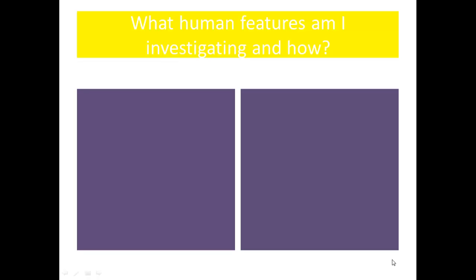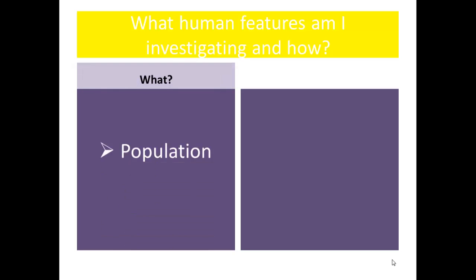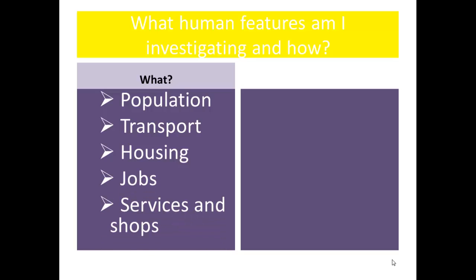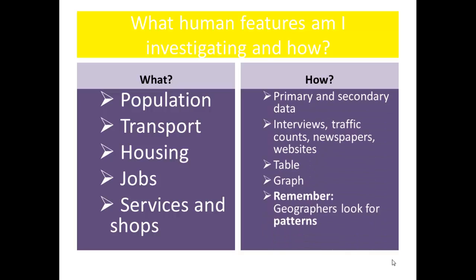To finish off — what human features are you going to investigate and how are you going to do it? These are the human features you've looked at that you're going to put into your project, along with ideas about how you could do it. You can use primary and secondary data involving interviews, traffic counts, newspapers, websites, etc. Put the results into a table, then turn the table into a graph. Remember always to comment on what you have found out, and that geographers look for patterns. Good luck and make sure you look at the other podcasts.